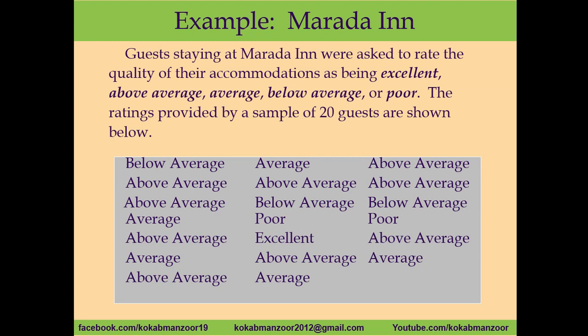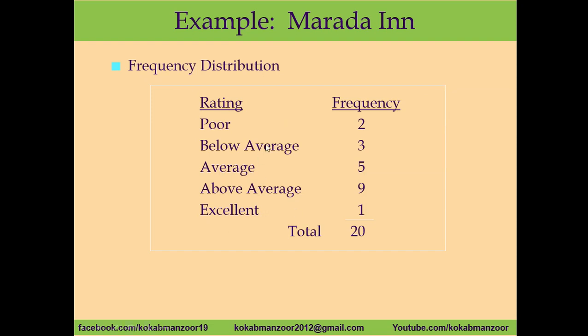For example, in a hotel we asked at least 20 guests how they would rate the accommodations, and we gave them four or five categories: excellent, above average, average, below average, or poor. The first guest said below average, the second said above average, the third also said above average, the fourth said average, the fifth said above average, and so on. Looking at this raw data, it does not give us any clear meaning.